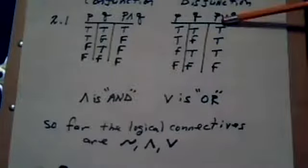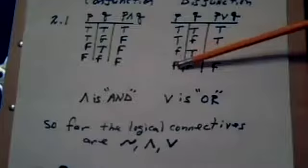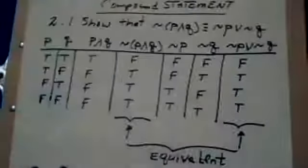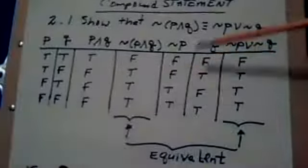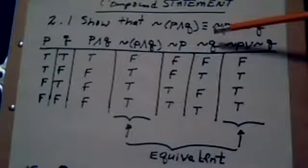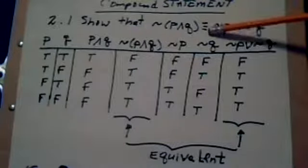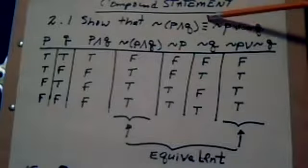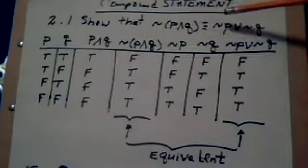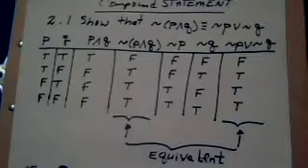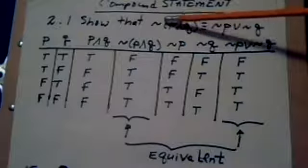This truth table looks bigger because there's more things involved. We're supposed to show that the left side is equivalent to the right. For these to be equivalent, you have to produce the same result, and we're going to demonstrate that they do. You do the left first.